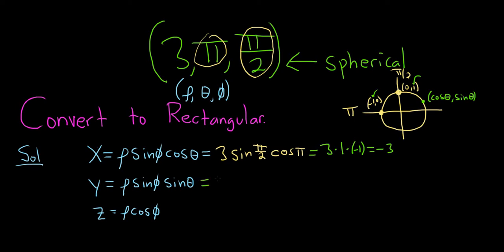y is equal to rho, so that will be 3, sine of phi, so sine of pi over 2, times the sine of theta, so sine of pi. So this is 3. Sine of pi over 2 is 1, just like before. Now the sine of pi is the y coordinate at pi. This will be 0. So this whole thing here is just 0.